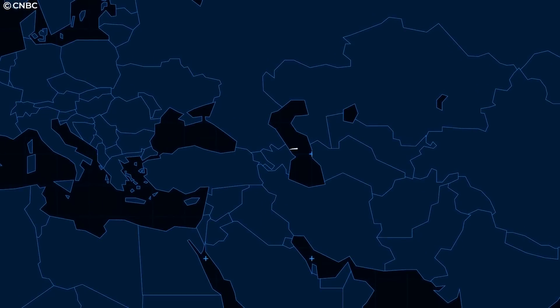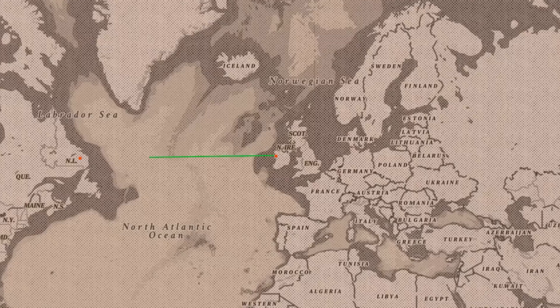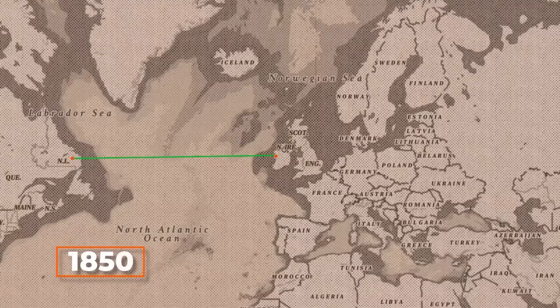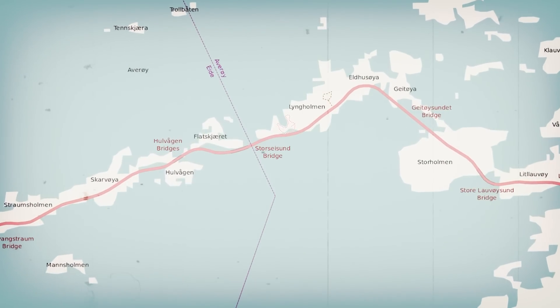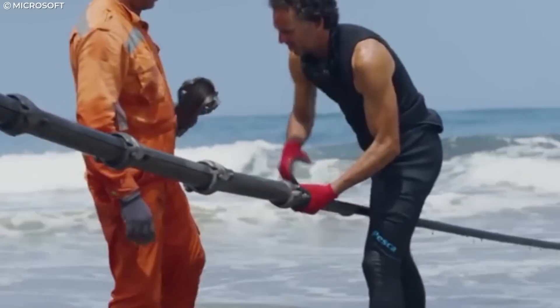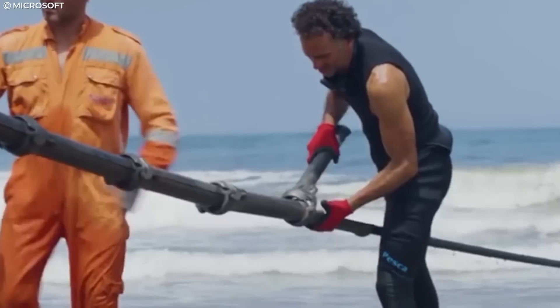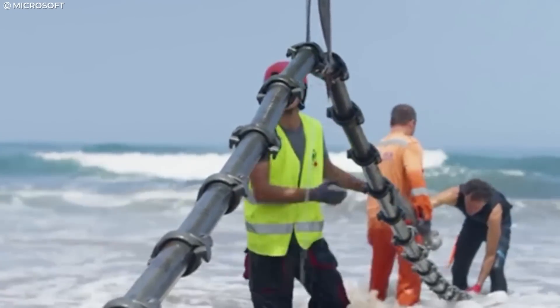The idea of transmitting signals through wires by connecting two landmasses separated by an ocean is not new. The first ever undersea cable was laid in 1850 between Britain and France. Later, in 1958, the Atlantic Ocean was bridged. It is hard to imagine that we are still essentially using the same concept even after 170 years.